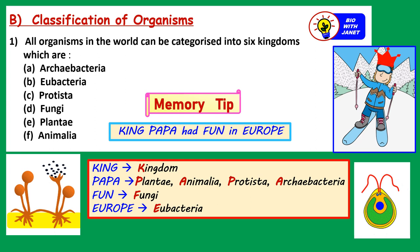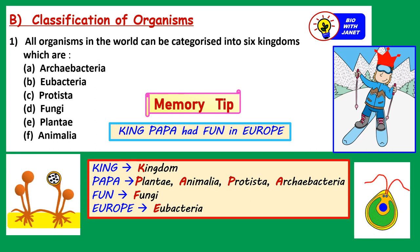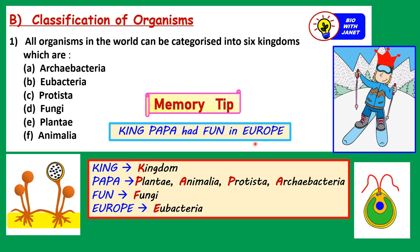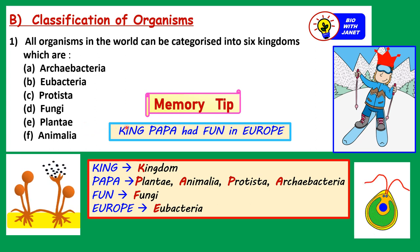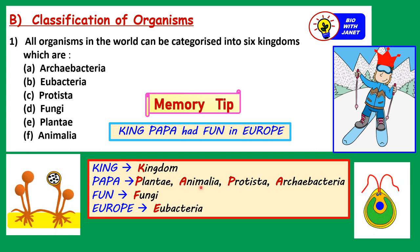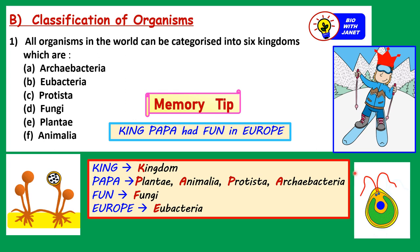For the classification of organisms, all organisms in the world can be categorized into six kingdoms of life: archaebacteria, eubacteria, protista, fungi, plantae, and animalia. The memory tip is 'King Papa had fun in Europe' — King stands for Kingdom, Papa for Plantae and Animalia, Protista, Archaebacteria, and then Fun for Fungi and Eubacteria.